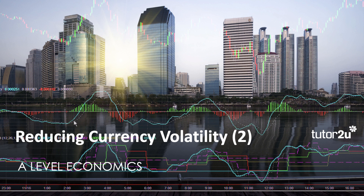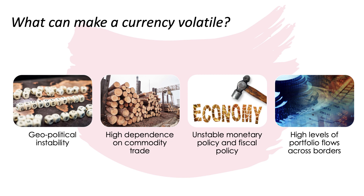Welcome to the second video in our suite looking at currency volatility in markets, particularly during this time of great economic uncertainty. We'll look at causes of volatility and also think about ways in which governments and central banks might try to limit it. There are four general factors that can increase a country's susceptibility to currency volatility: geopolitical instability, high dependence on commodity trade, unstable monetary and fiscal policy, and high levels of portfolio flows across borders.